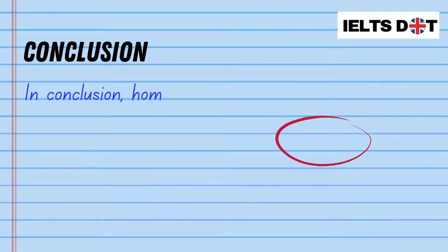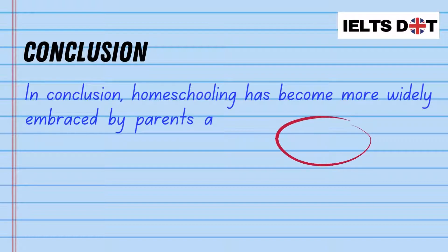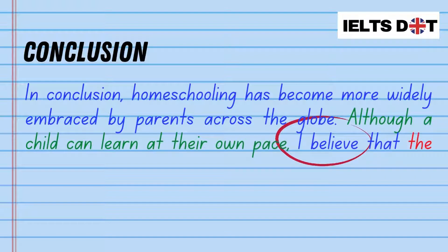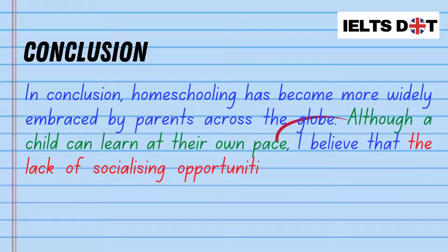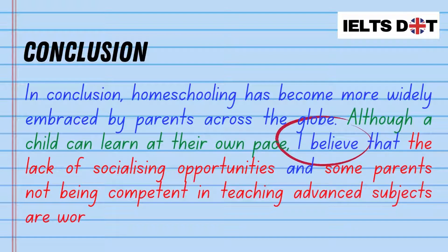Now let's move on to the conclusion. Remember, don't add anything new in the conclusion — basically it's a paraphrase of the introduction. Don't forget to include the one advantage and the two disadvantages that support your opinion. Here's an example: 'In conclusion, homeschooling has become more widely embraced by parents across the globe. Although a child can learn at their own pace, I believe that the lack of socializing opportunities and some parents not being competent in teaching advanced subjects are worrying.'